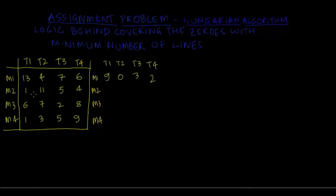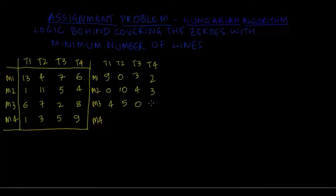Taking the least in the second row, which is 1, I will get 0, 10, 4 and 3. And 2 is the least in the third row, so I would get 4, 5, 0 and 6 if I deduct 2 from all the numbers. Finally, 1 is the least in the fourth row, so I will deduct 1 from all the numbers to get 0, 2, 4 and 8.